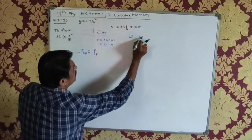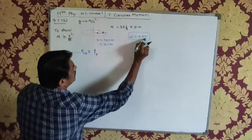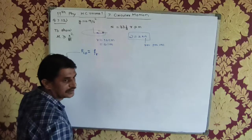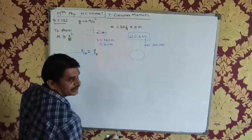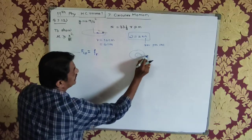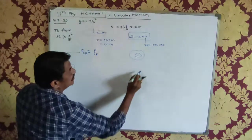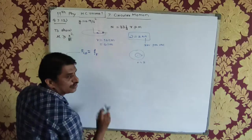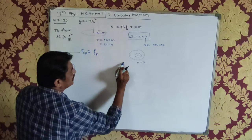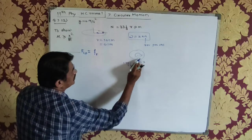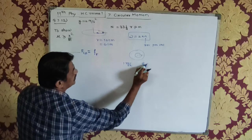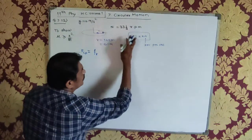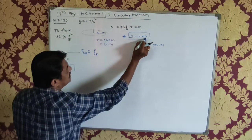Omega is the angular velocity. The formula is ω = 2πn, where n is revolutions per second. Because if an object does one revolution in one second, the angle covered is 2π radians. If N is given in revolutions per minute, we divide by 60, so ω = 2πN/60.